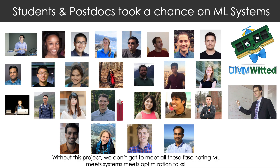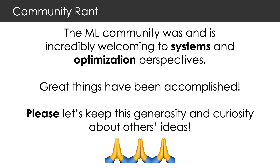The most important thing in any research project is the set of people involved. The folks on this slide were the students and postdocs who took chances on the area of systems meets machine learning in our labs, in large part because of this paper. This paper combined three different communities — machine learning, optimization, and systems. It was my first NeurIPS and I was instantly attracted to the field and felt welcomed in a way I hadn't in many other fields. If we're allowed to send one message to the field, it would be this: please keep this spirit. Please stay generous and curious about understanding each other's ideas. Machine learning is a fascinating area in part because it's a melting pot. Thank you for your time and attention.